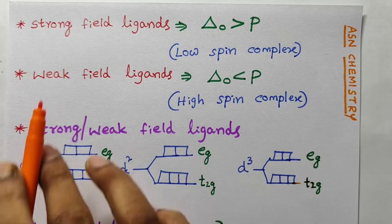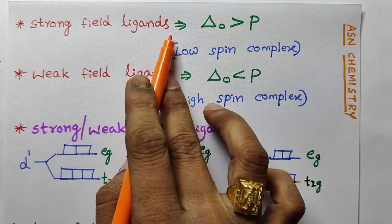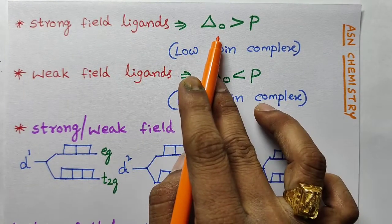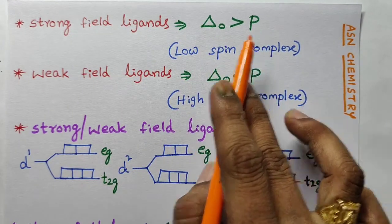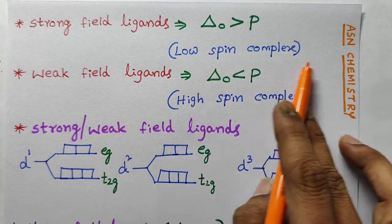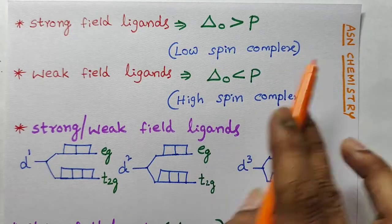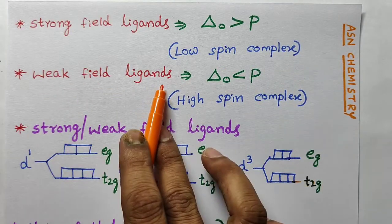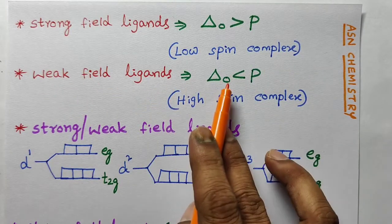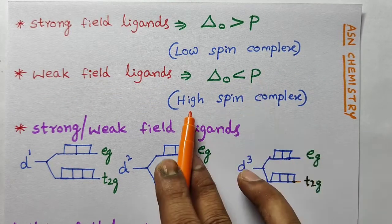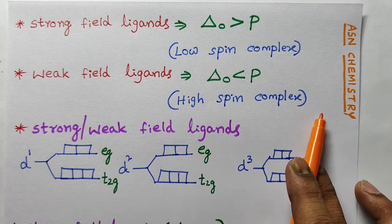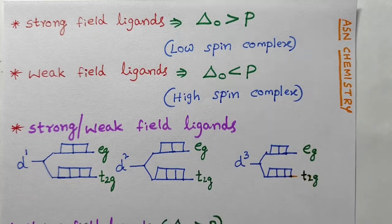Once again I will repeat. Strong field ligands: delta O is greater than pairing energy, which forms a low spin complex. In presence of weak field ligands, delta O is less than pairing energy, which forms a high spin complex.